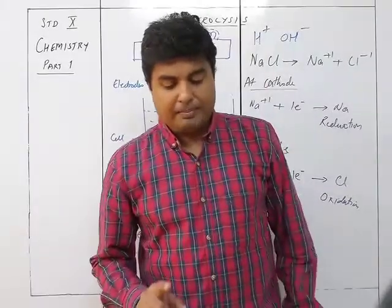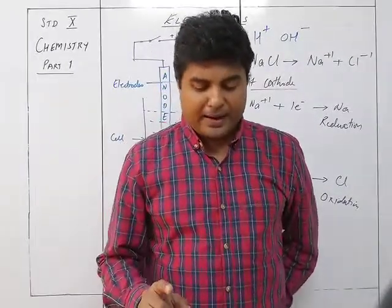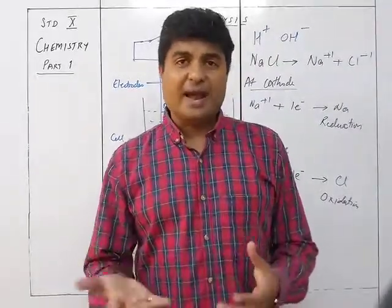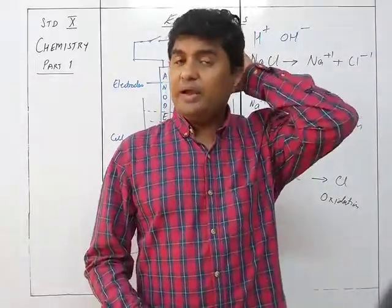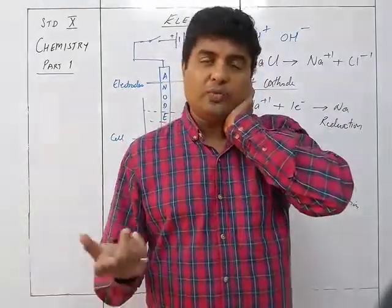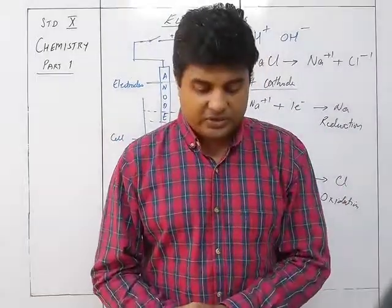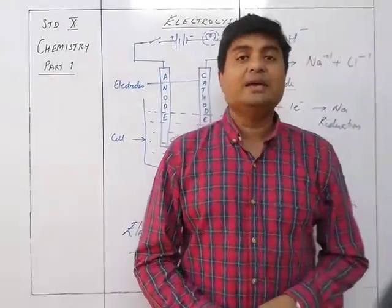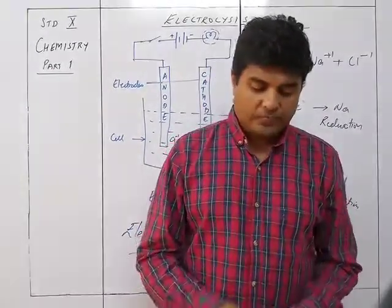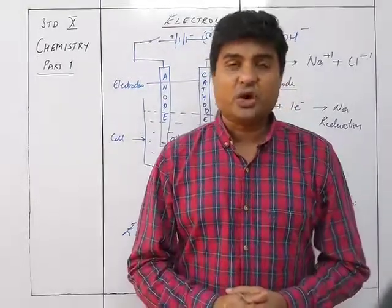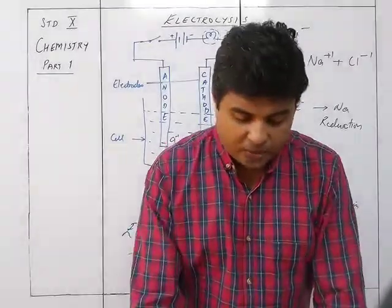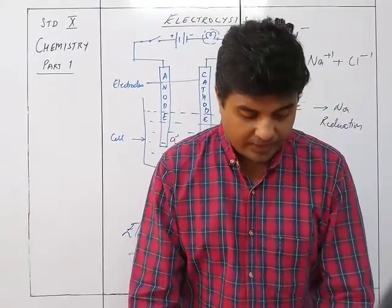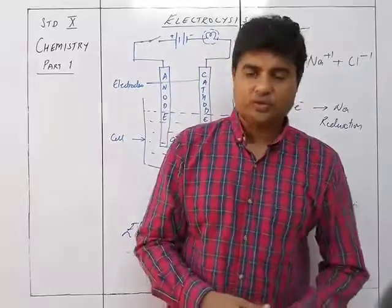Only metals and hydrogen gas are liberated at the cathode, and hence they are called electropositive elements. Only non-metals are liberated at the anode, and hence they are called electronegative elements. These are the different characteristics of electrolysis. We will now move on to the next topic, electrolyte dissociation, which we will continue in the next video.